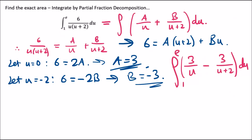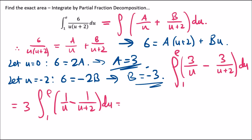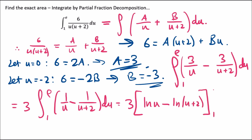Each term integrates to a natural log: 1/u integrates to ln u, and 1/(u+2) integrates to ln(u+2) — since the derivative of (u+2) is 1, the coefficient outside the log is 1. So the result is 3 times [ln u minus ln(u+2)] evaluated from 1 to e.